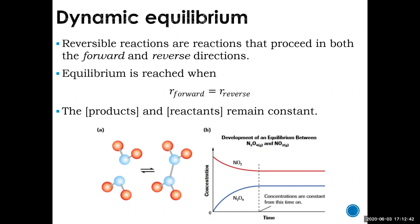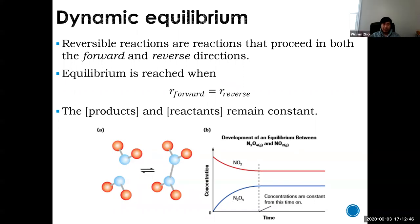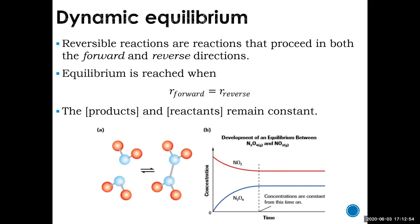If the rate forward and reverse are not the same, they're not in equilibrium — they're still progressing and will eventually become the same.